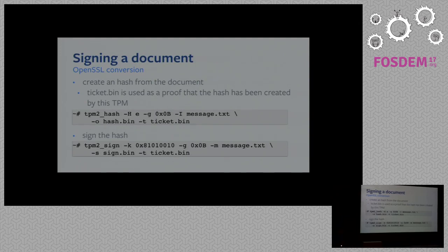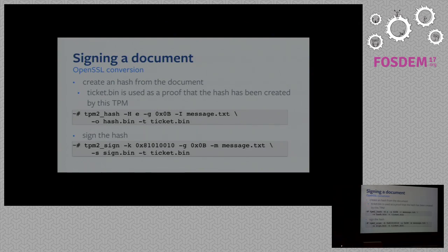Then we sign the document. With the exported public key we can verify it using these two commands: we hash a message and then sign it. There is a sort of bug in the Intel tooling which requires you to pass the message to the sign command, though in a correct implementation you only need to pass the hash. You can see we are using a ticket.bin file — this is interesting for TPM 2.0 because it's the way you can offload multi-step operations. You can sign only objects generated inside the TPM, and to prove that what you're passing to the sign command was generated by the TPM, you generate this ticket, which is an HMAC containing the proof.